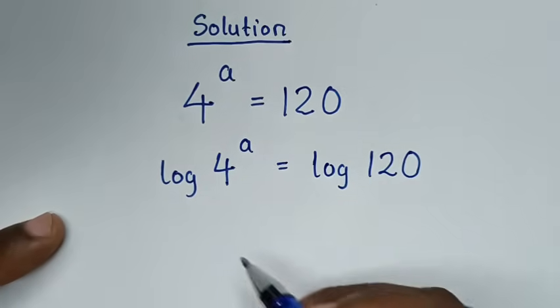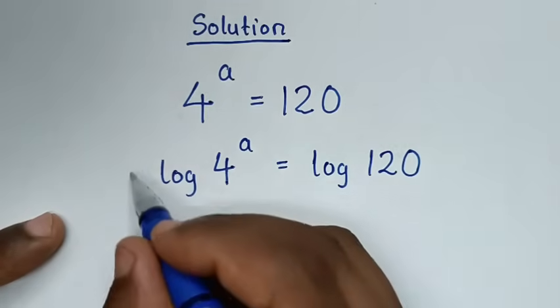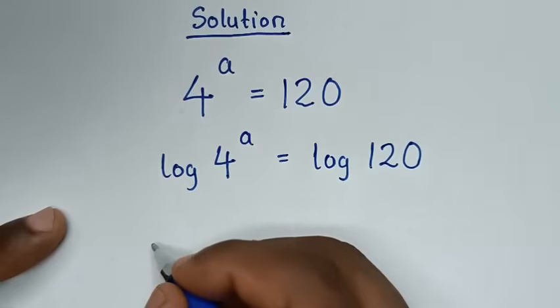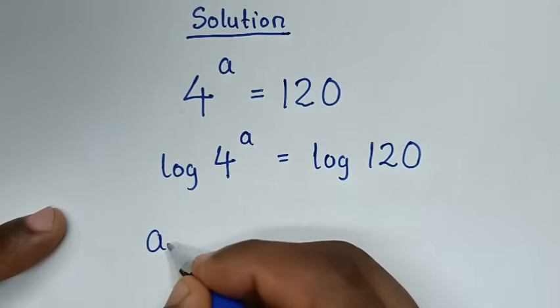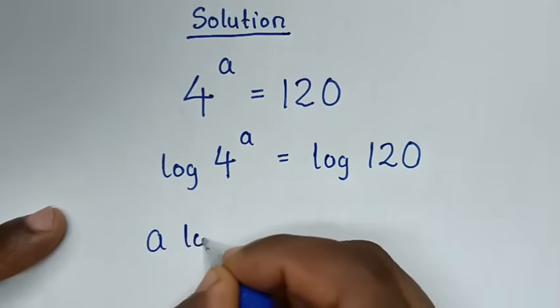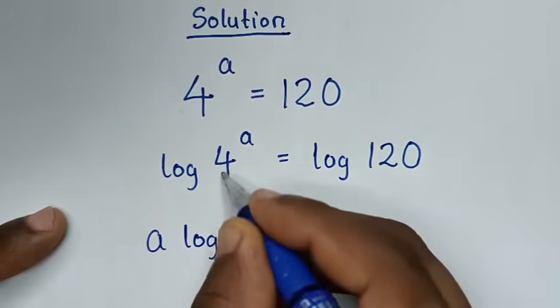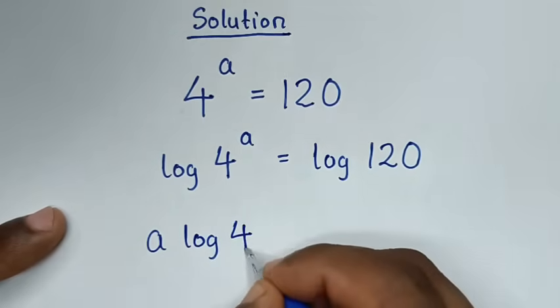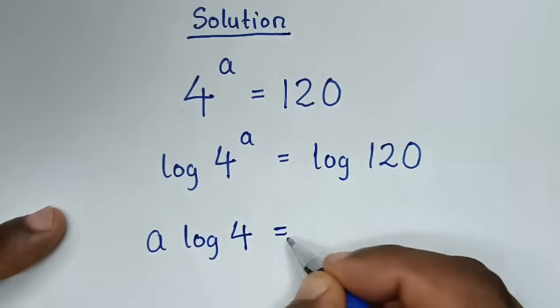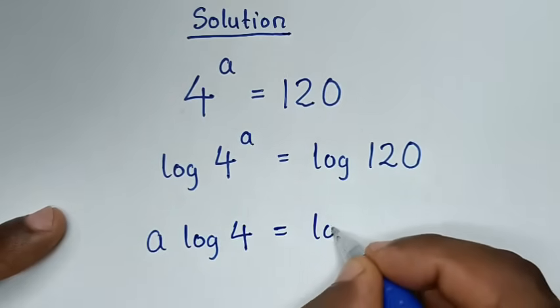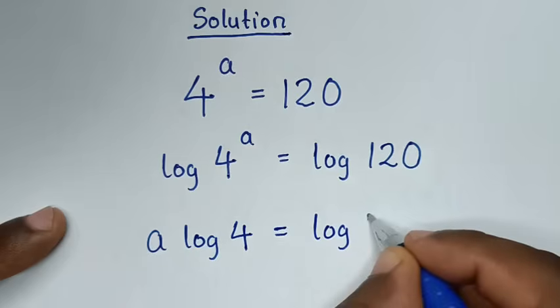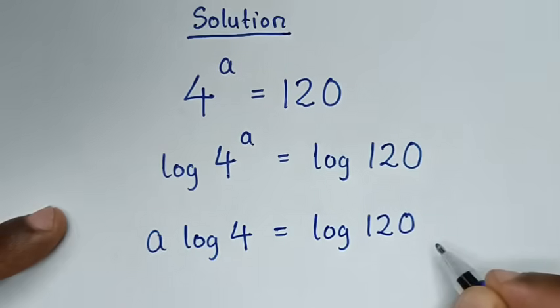Then this power of a will move to the base. So it will be a times log of 4 is equal to log of 120.